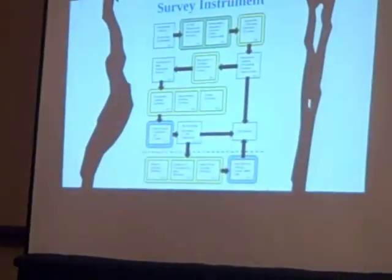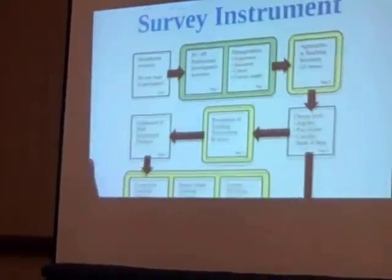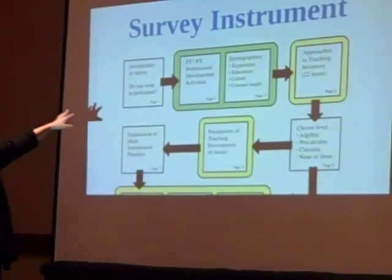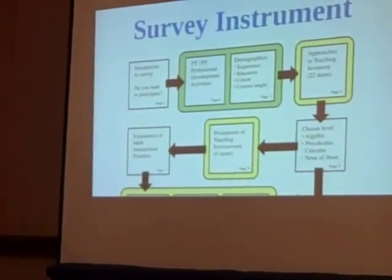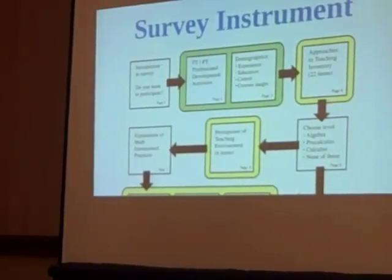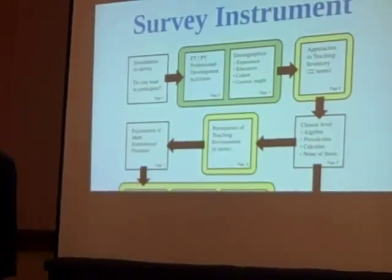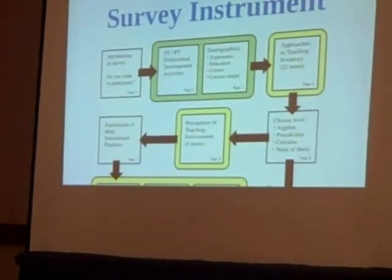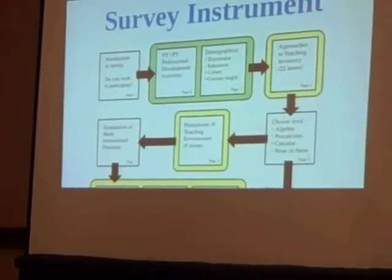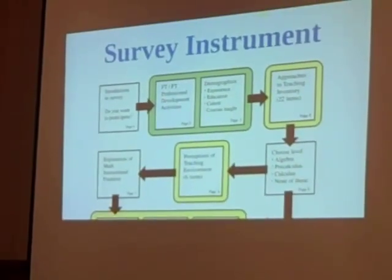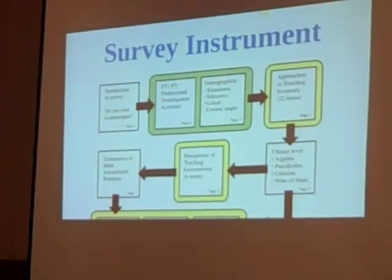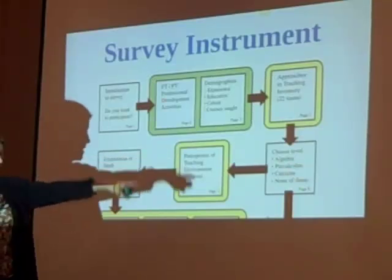The survey instrument is a little complex. It starts out with the standard 'do you want to participate?' and asks a bunch of questions about work status and what kinds of professional development activities that instructor participates in. Then demographic information — experience, education, what kinds of courses you teach. Instructors were given a long list of courses and could check off anything they had ever taught, because one of my variables was the variety of things they taught. Then they had to complete the Approaches to Teaching Inventory — the ATI — which was 22 items.